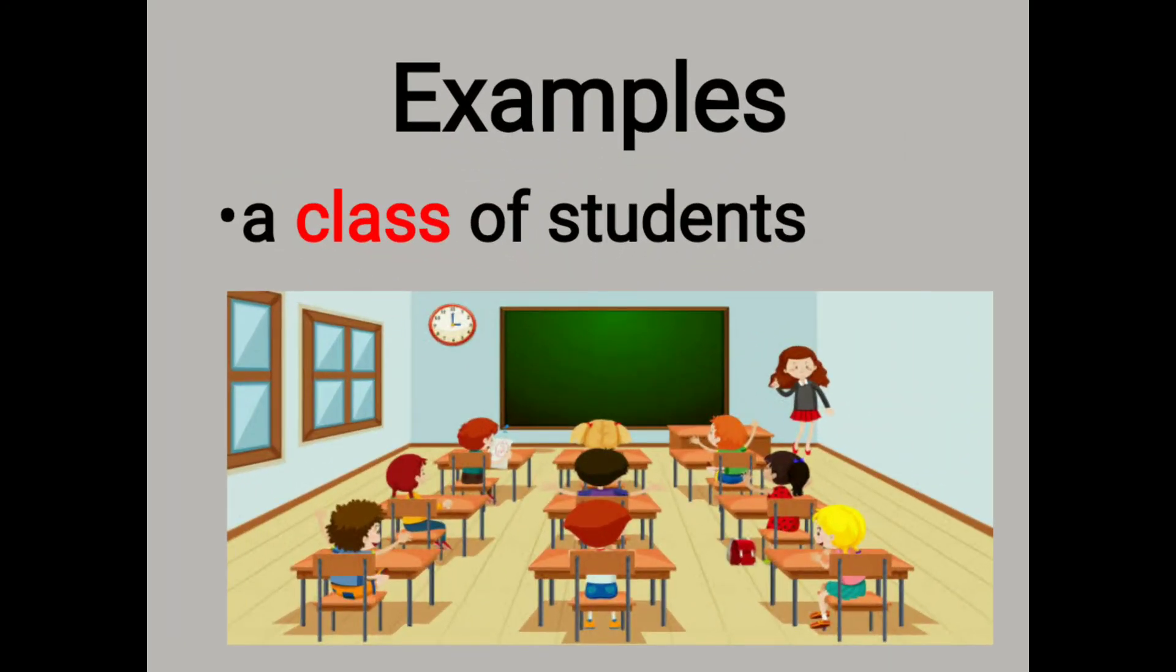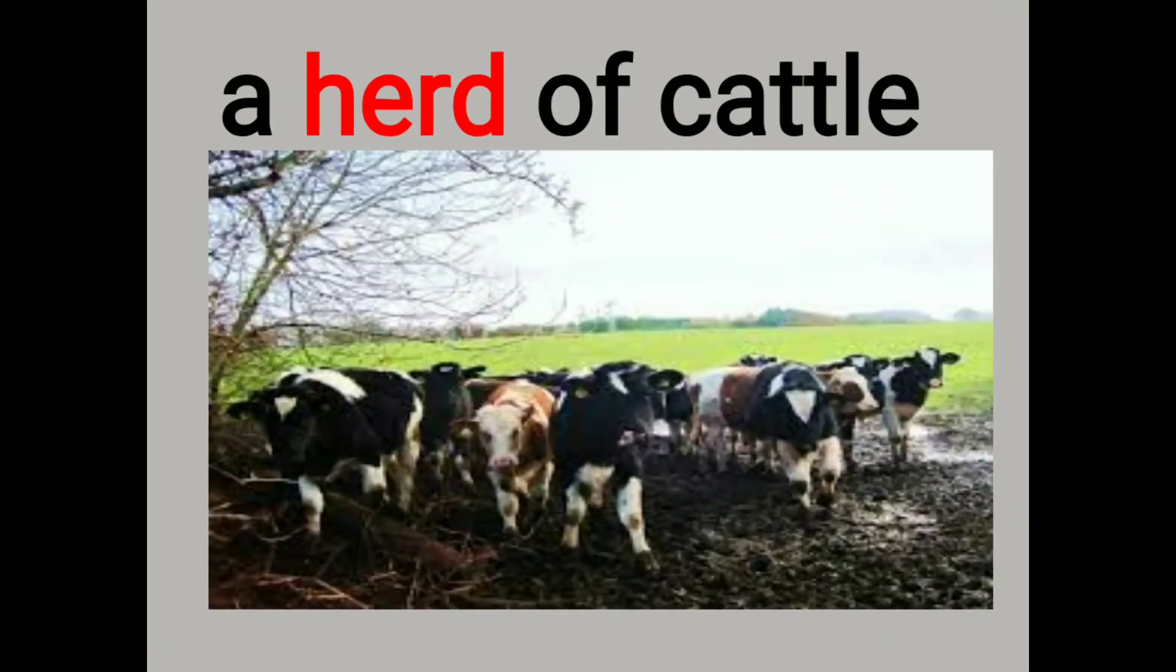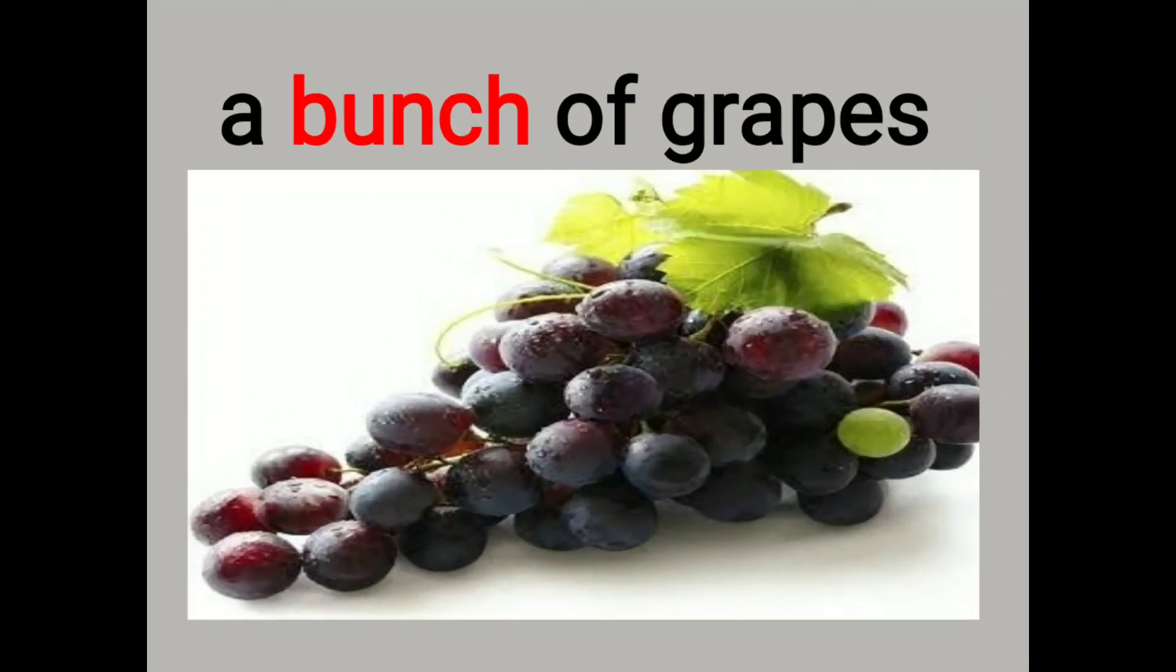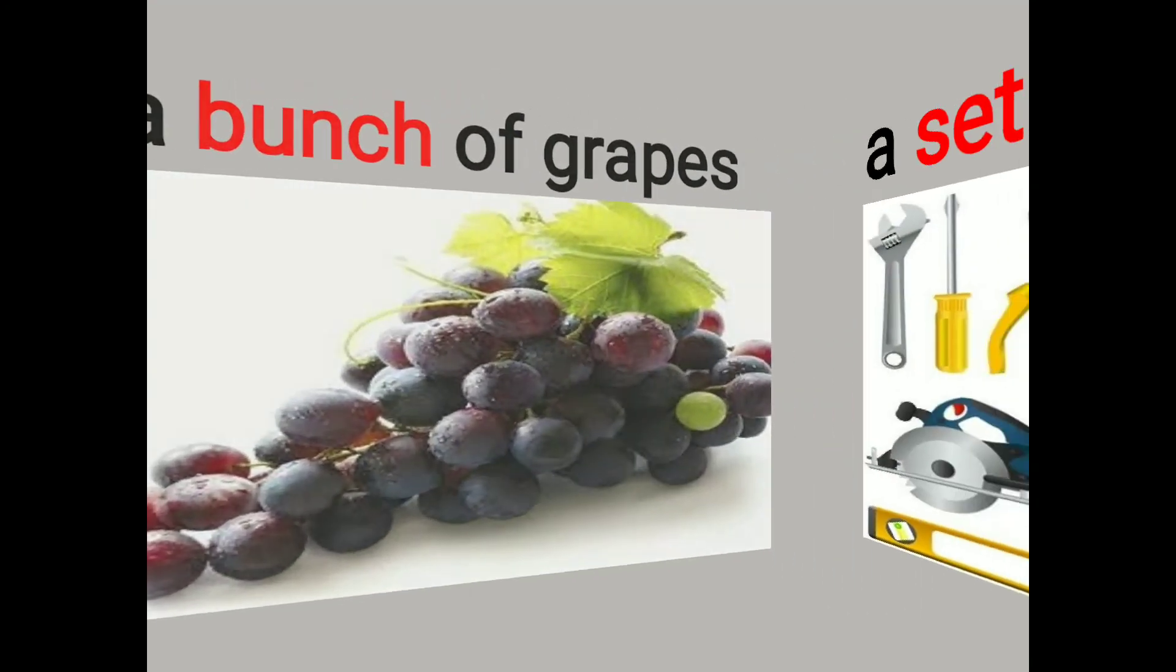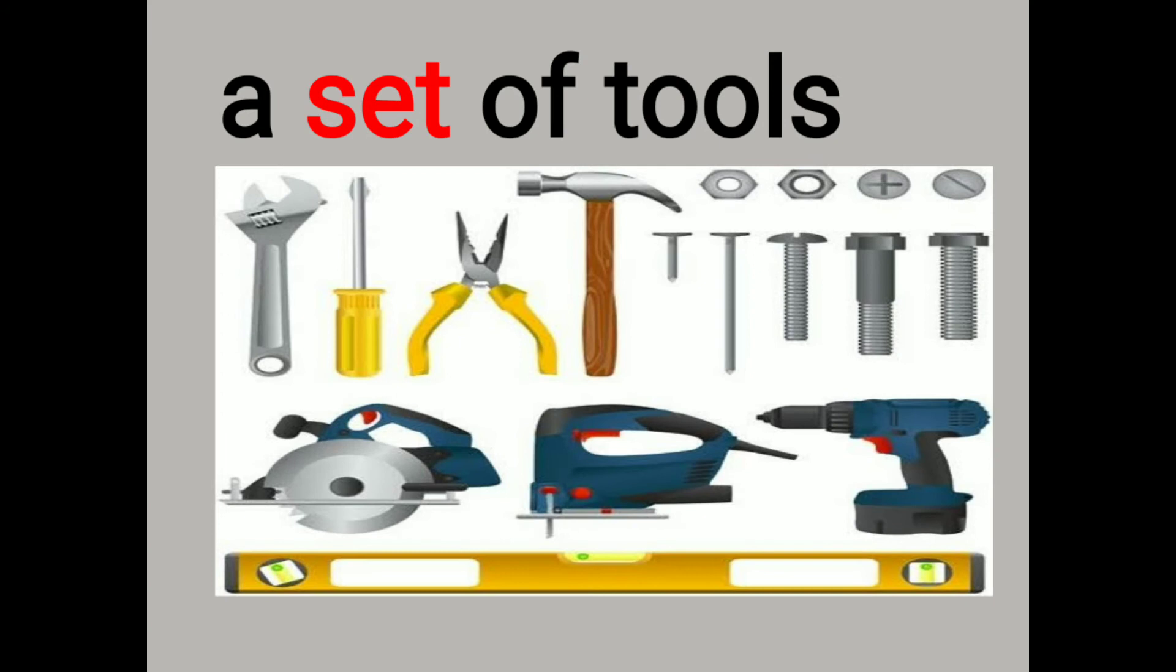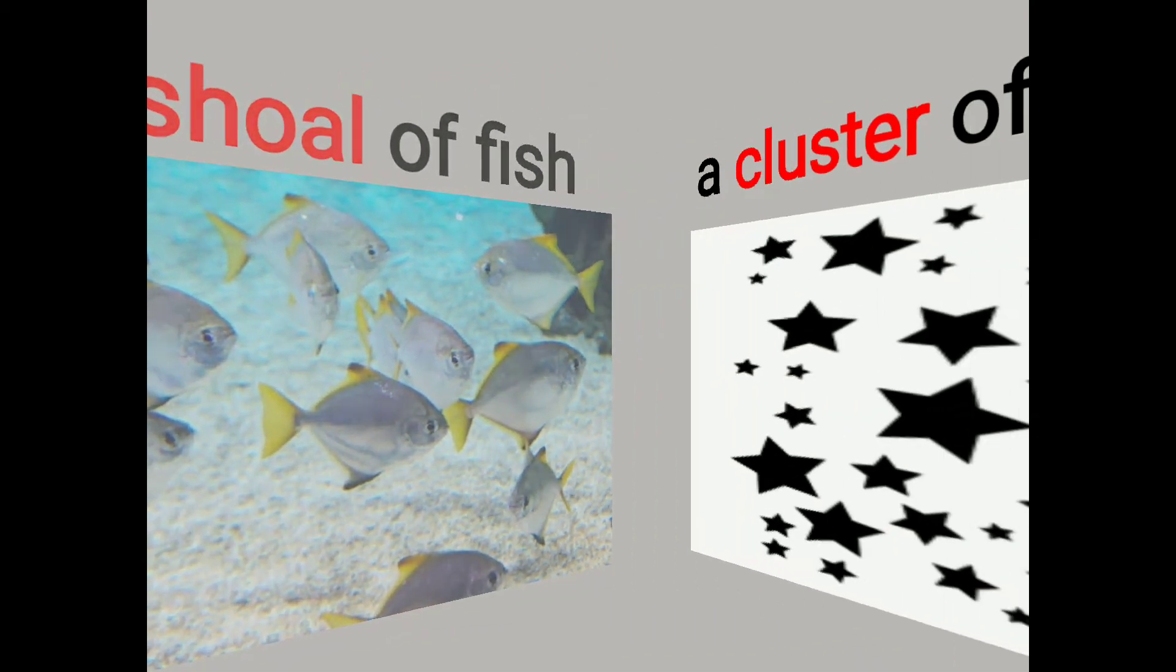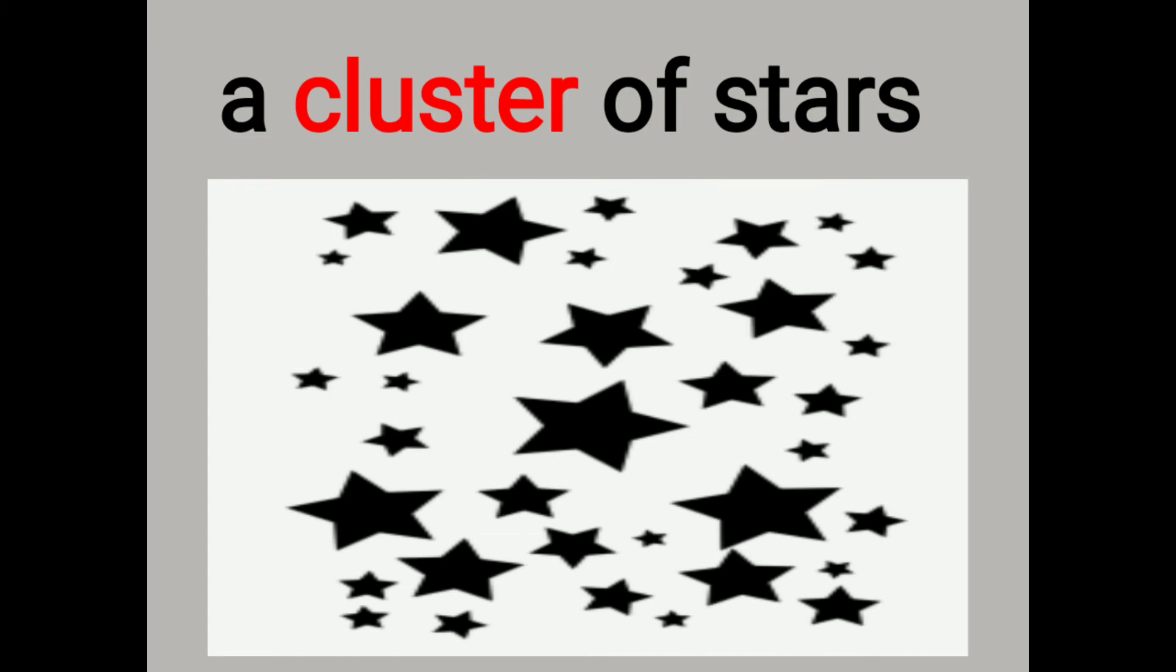Let's see some of the examples of collective nouns. A class of students, a herd of cattle, a bunch of grapes, a set of tools, a shoal of fish, a cluster of stars.